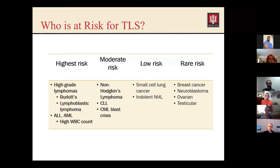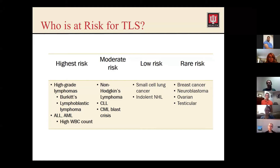Cancers to watch for include any high-grade lymphoma — especially if a patient is admitted with Burkitt's or lymphoblastic lymphoma starting on treatment, you'd want to prophylactically treat them for tumor lysis syndrome. We do see it in ALL and AML, but typically only if patients have a high white blood cell count. Moderate risk includes non-Hodgkin's lymphoma patients with bulky disease. CLL with really high white counts or CML blast crisis can also be at risk. Lower risk are solid tumors — I've rarely seen it in small cell lung and prostate cancer, but leukemias and lymphomas are where we really need to start prophylaxis.